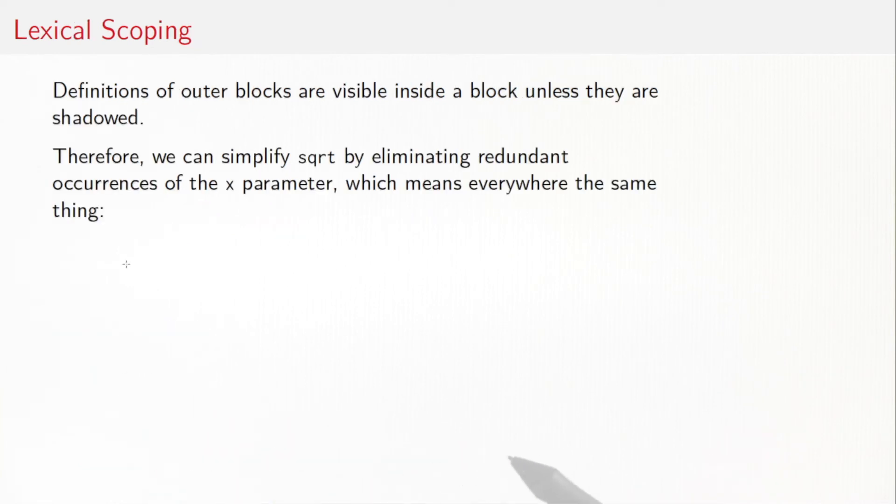So we've seen that definitions of outer scopes are visible inside a block unless they're shadowed. We can use that to simplify square root by eliminating redundant occurrences of the x parameter, which means everywhere the same thing.